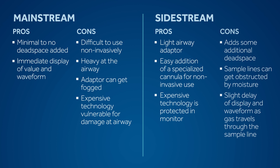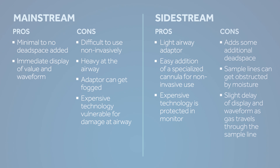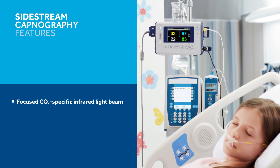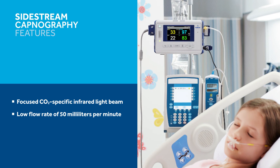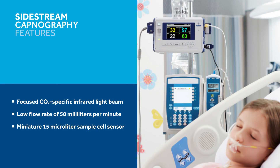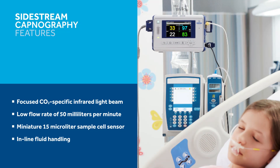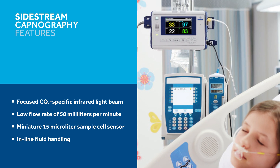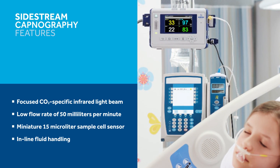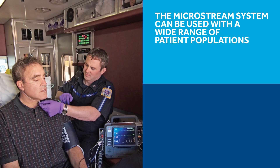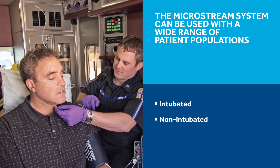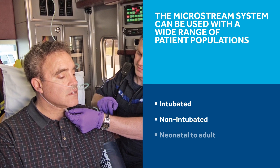Microstream CO2 sidestream sensors and breath sampling lines address some of the limitations of conventional systems. Microstream technology features a focused CO2-specific infrared light beam, a low flow sample rate of 50 milliliters per minute, a miniature 15 microliter sample cell sensor, and in-line fluid handling. Non-invasive measurement of ETCO2 can be achieved while oxygen is being delivered without diluting the sample. The microstream system can be used with a wide range of patient populations, including intubated and non-intubated patients, and all patient ages from neonates to adults.